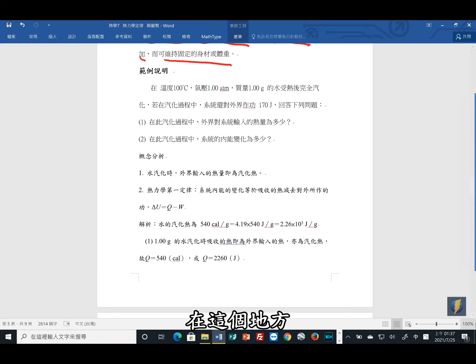这个概念可以说是热力学第一定律,它的基本概念其实就是能量守恒。我们举例说明,在这个地方,在温度100度C、气压一大气压、质量一克的水,受热以后完全气化。如果在气化过程中,系统对外界是做功170焦耳,回答这个问题。在此气化过程中,外界对系统输入的热量是多少?第二个是,在这个气化过程中,系统的内能变化是多少?